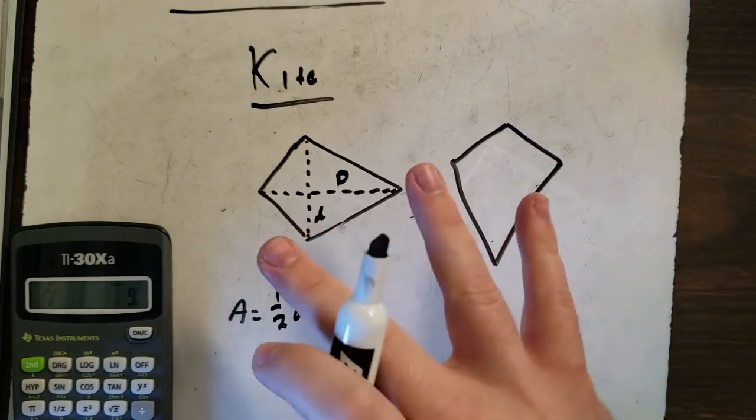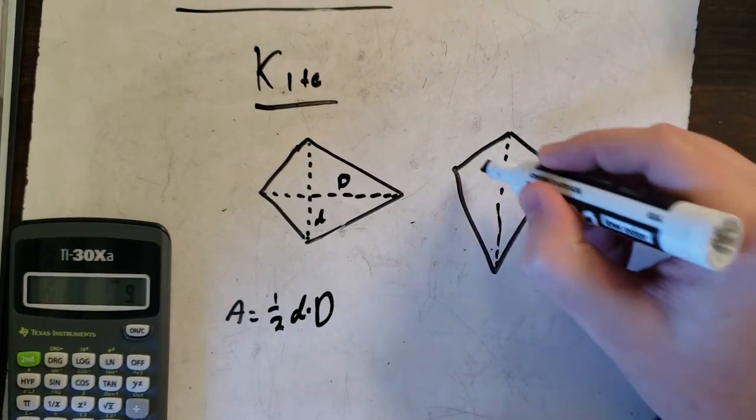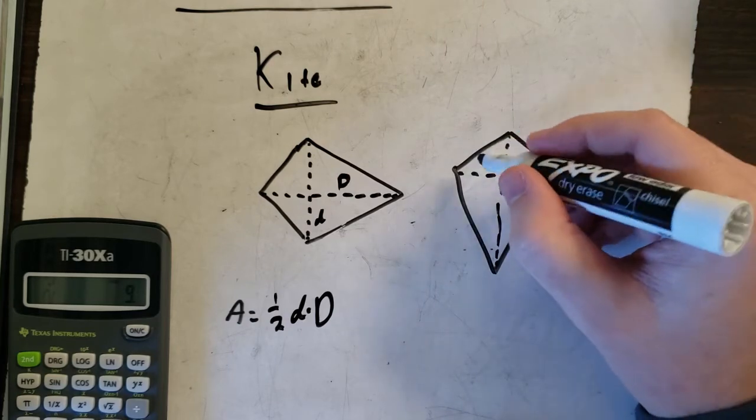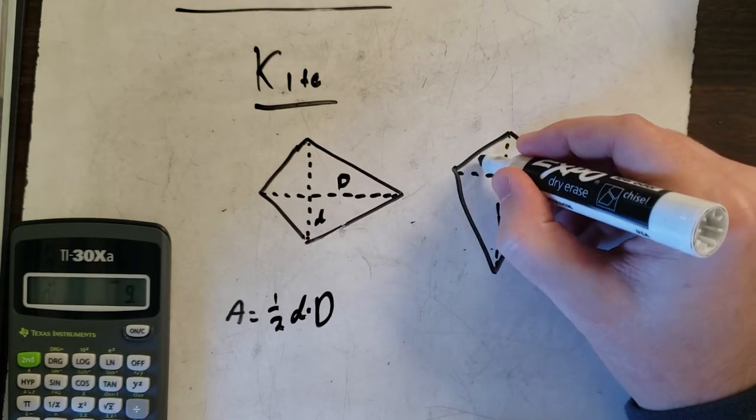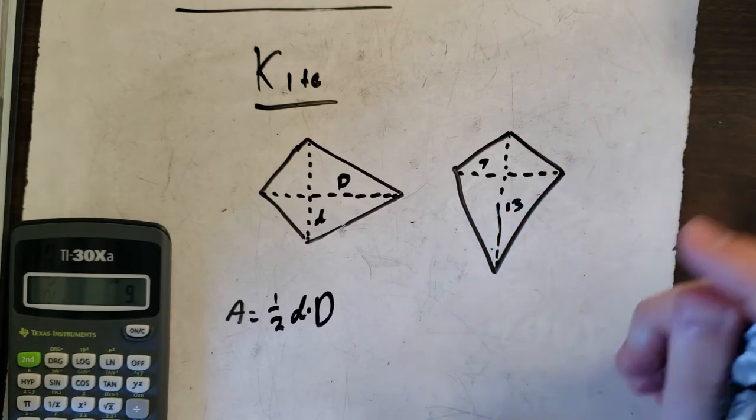Give you a little different look here. It's the same thing. Just flipped, or rotated. So we'll say our number here is 7, and over here is 13.